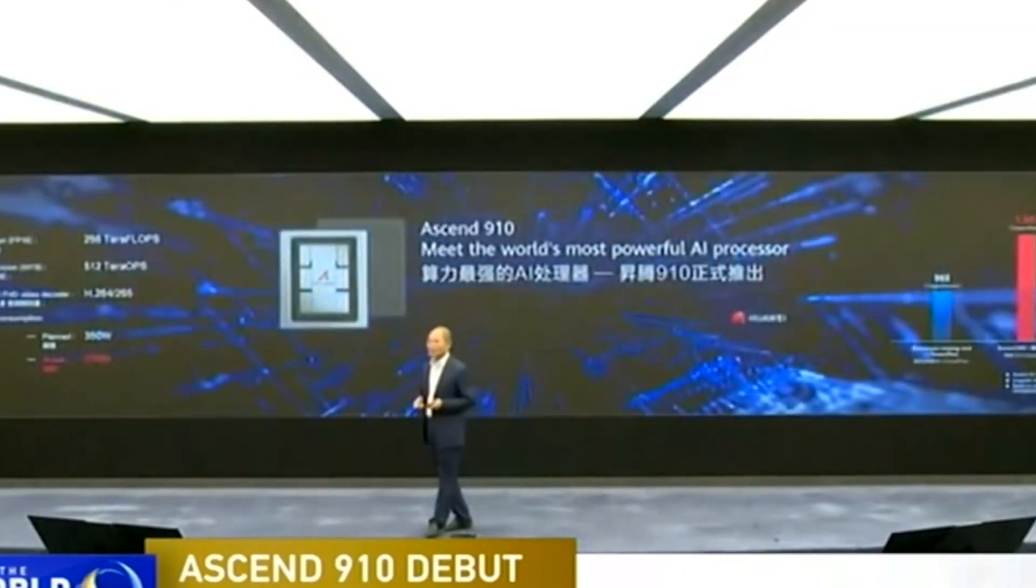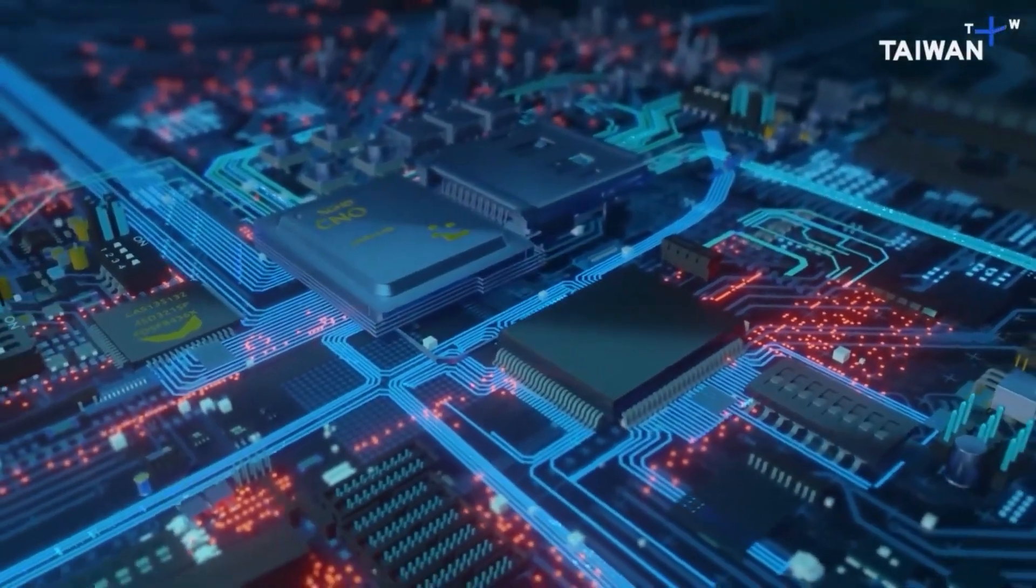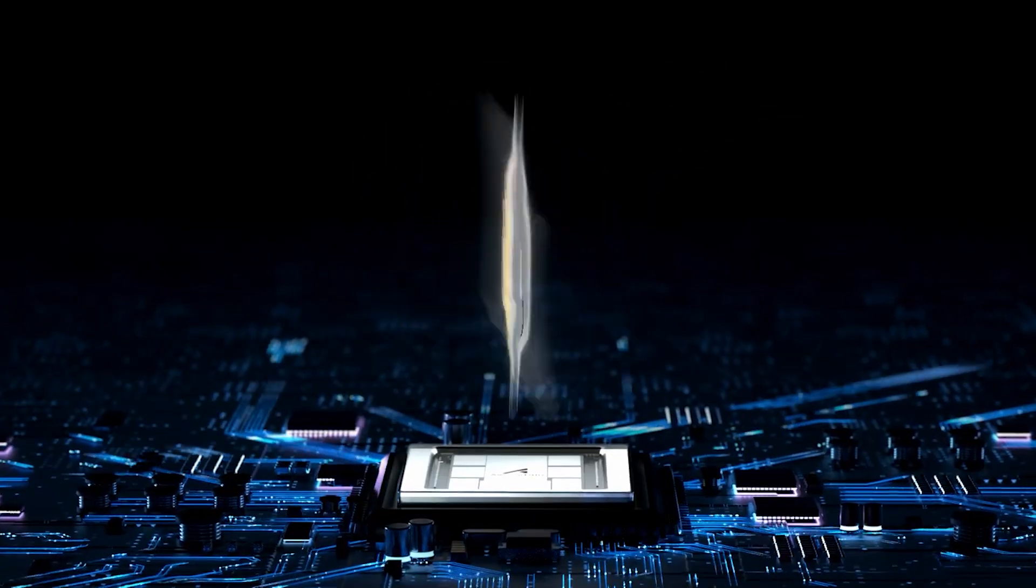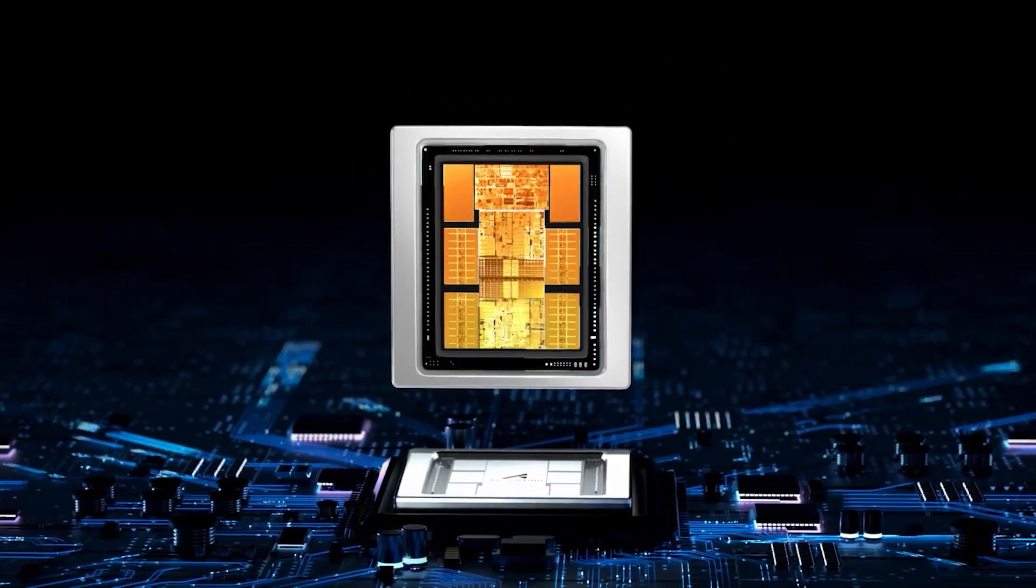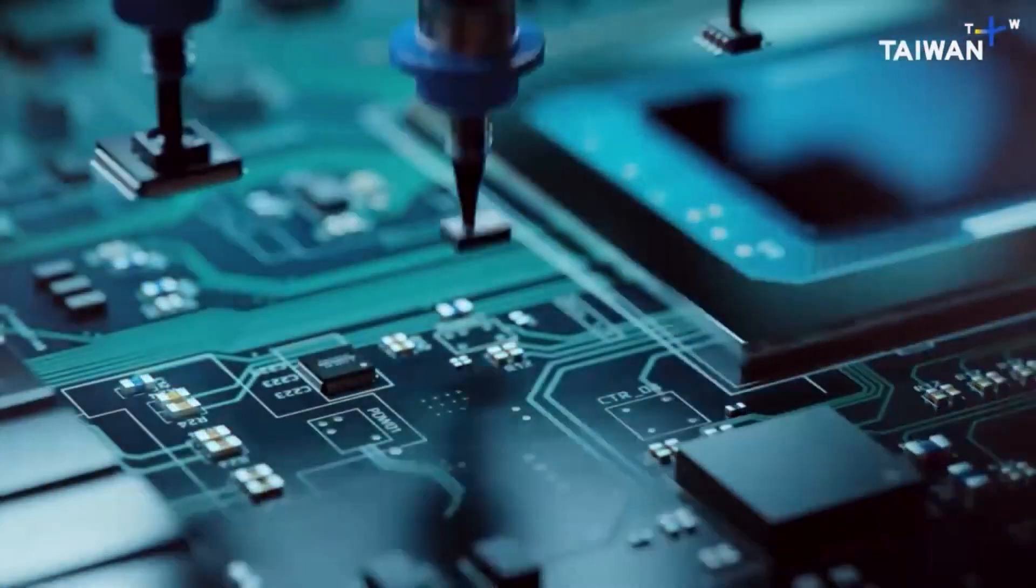Behind Huawei's chip success lies an unlikely partner, SMIC, or Semiconductor Manufacturing International Corporation. SMIC is China's leading chip foundry, though historically considered behind the curve. However, using older generation tools and extreme resourcefulness, SMIC has manufactured the 910C using a 7-nanometer process.